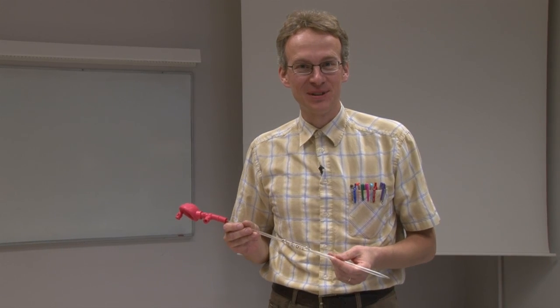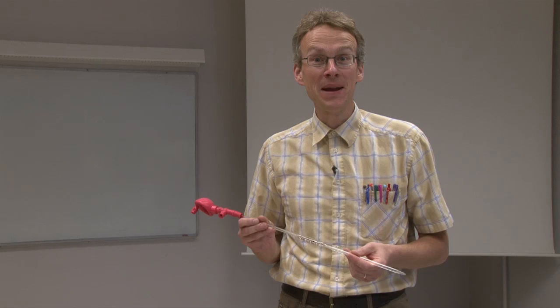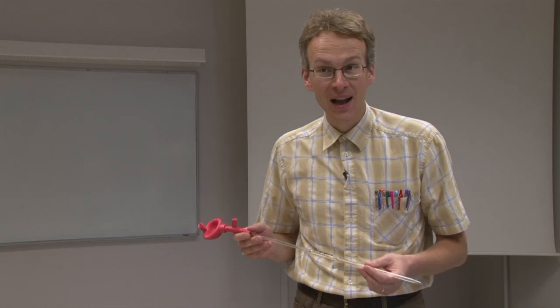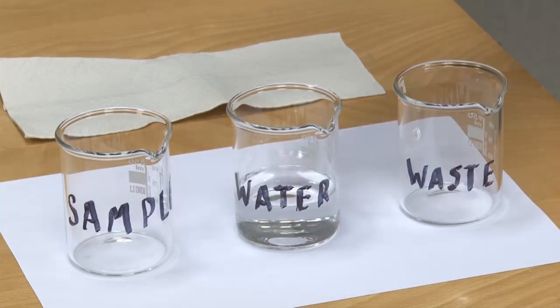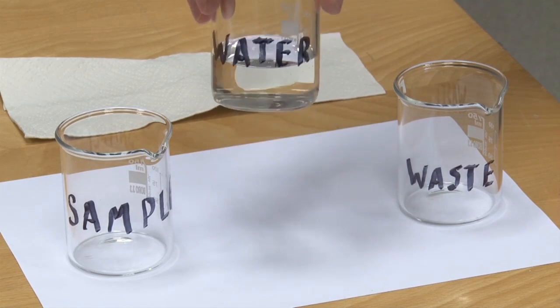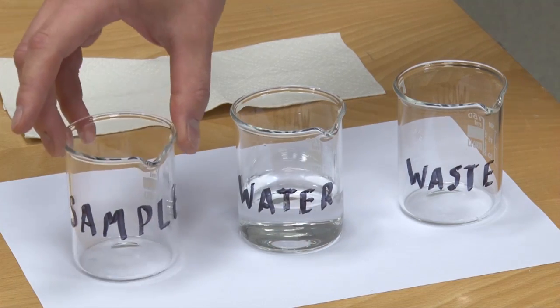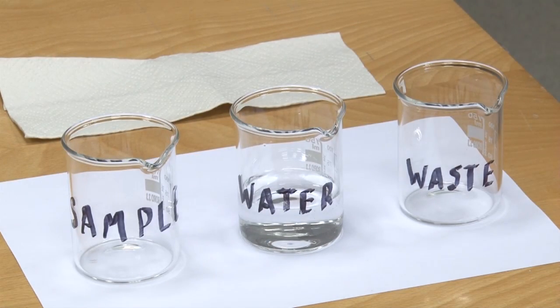Let us see now where measurement uncertainty comes from on the example of pipetting. So I'm holding in my hand a 10 milliliter volumetric pipet and I'm going to pipet exactly 10 milliliters of water from this water beaker into this sample beaker.